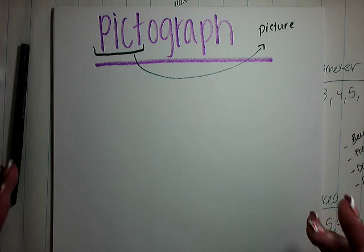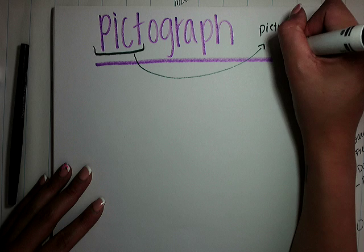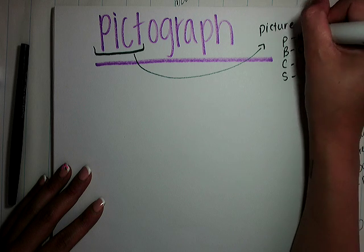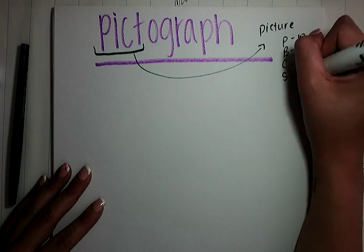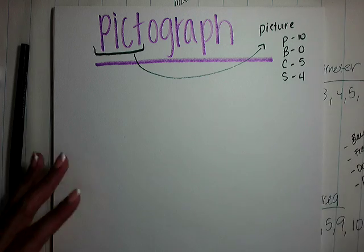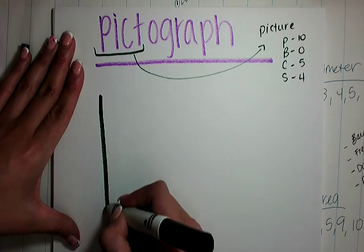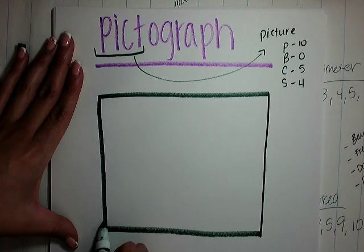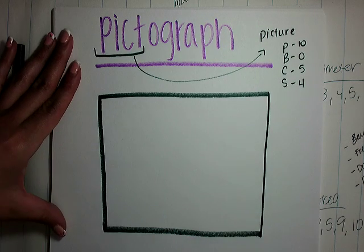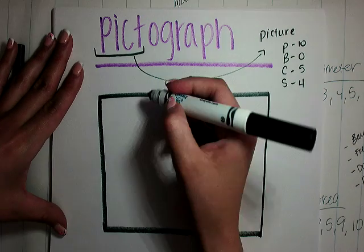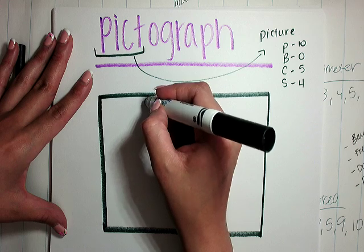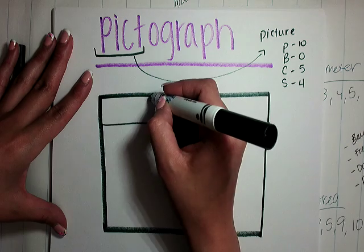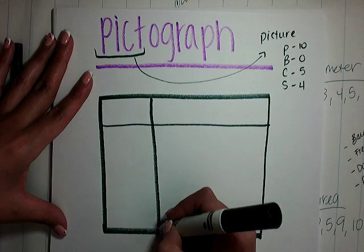Same data, same everything. So we've got Pikachu, Bulbasaur, Charmander, Squirtle — 0, 10, 5, 4. When you have a pictograph, you could either do it horizontally, which means side to side, or vertically, which is up and down. I personally want to do horizontally just because I like the way it looks.